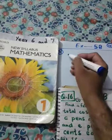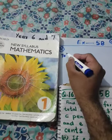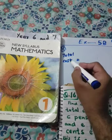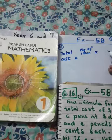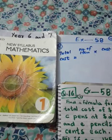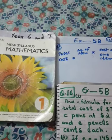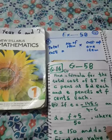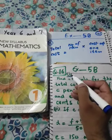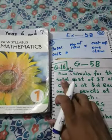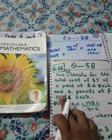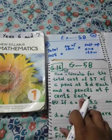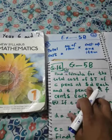So this means that if we want to find the cost, total cost is actually: total cost equals number of items multiplied by cost of one item, or cost of each item. So this is the formula. Now let me read the first part again: find a formula for the total cost dollar T of C pens at dollar D each, and also E pencils at F cents each.